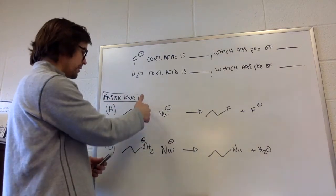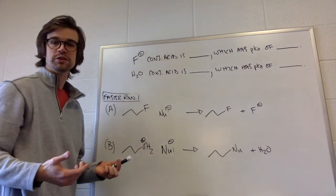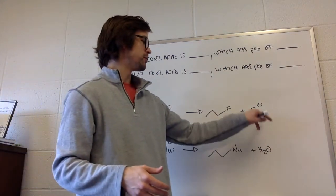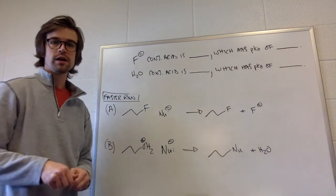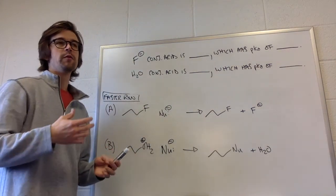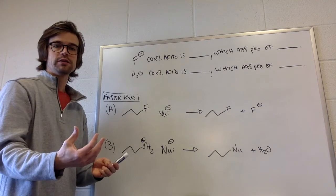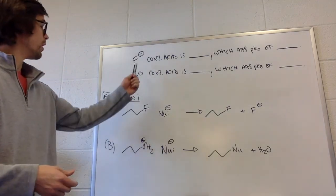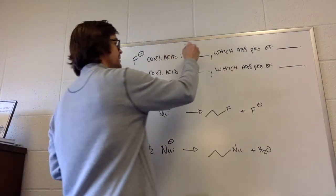I reoriented the board by just putting in the text on the bottom of page 5 on here. So we're trying to figure out which of these is the better leaving group, fluorine versus OH2+. And what we have to figure out is which of them is more stable by themselves. And we know that we can relate their stability to acid-based chemistry.